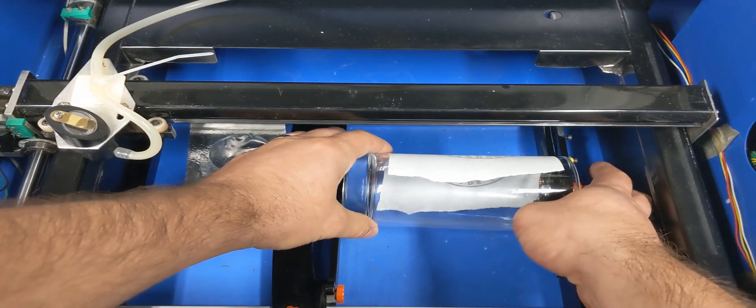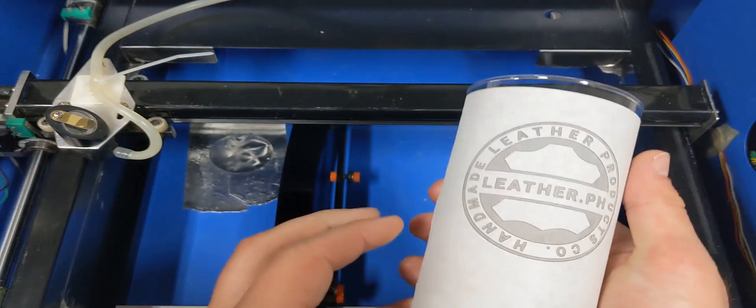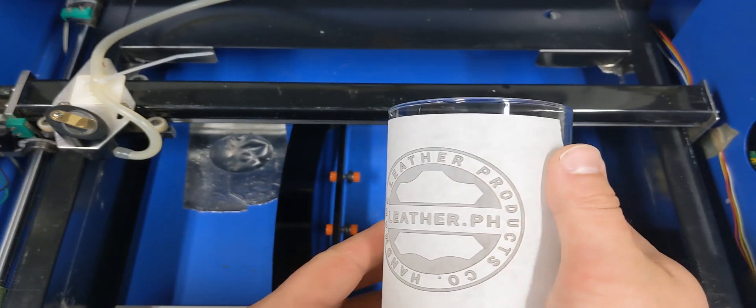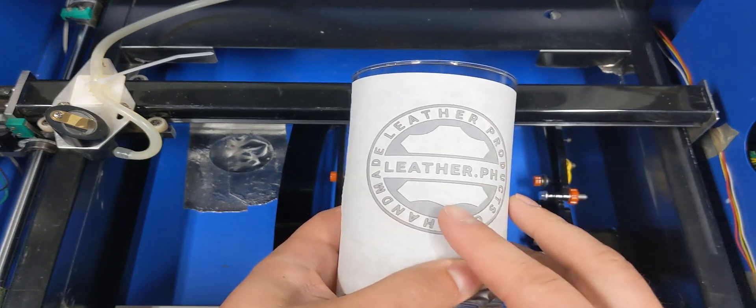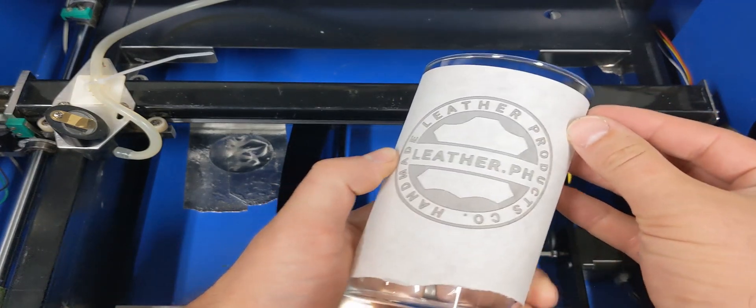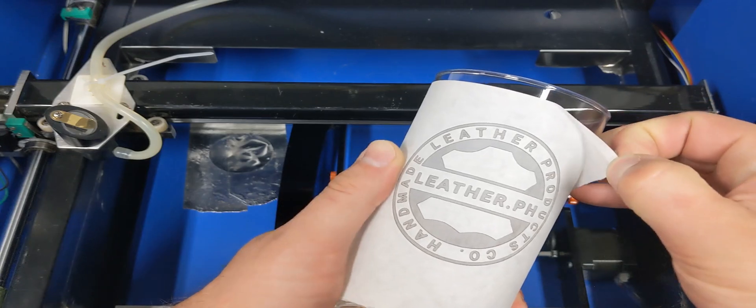Alright, now that's done engraving, this is what we're left with. And all we have to do now is clean up the last little bit of soot out of there and pull off all of our tape.